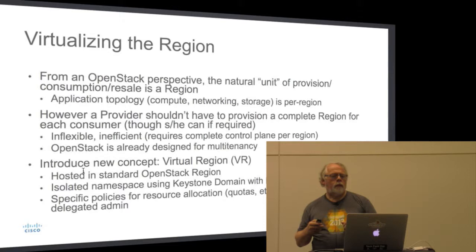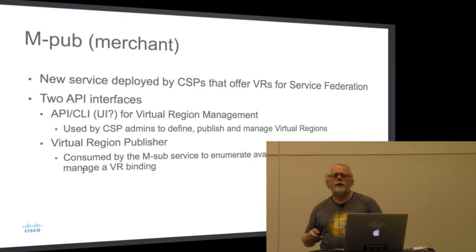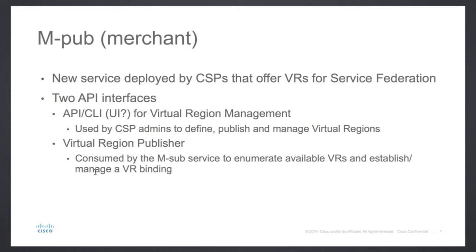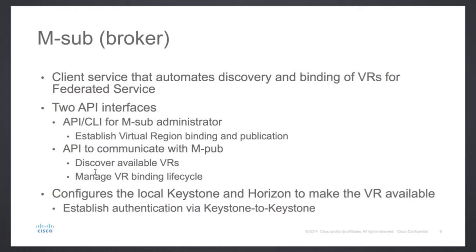There are two pieces of technology that we're introducing and working on — I'll talk about the project in a few minutes. The first is what we think of as a publisher or merchant of cloud services. You add this service to an OpenStack cloud and it allows you to define and publish resources to potential consumers. The second piece is a subscriber or broker piece, which allows you to discover available cloud service providers, discover available resources and virtual regions, and then bind them into your cloud so that it looks seamlessly like one of your regions.